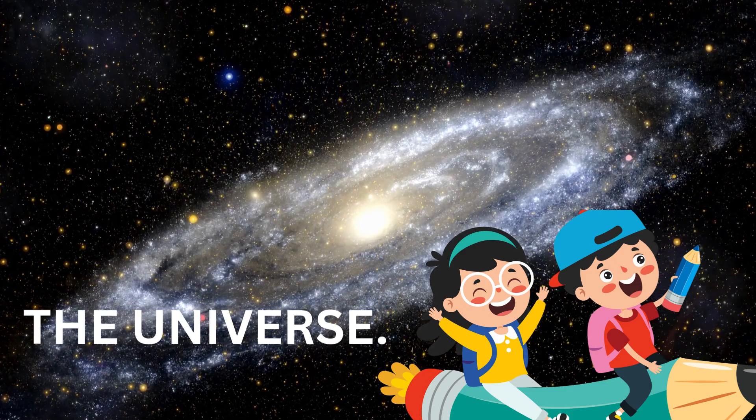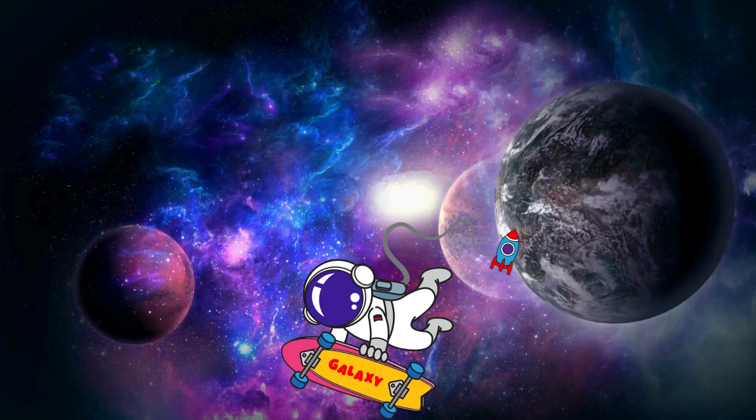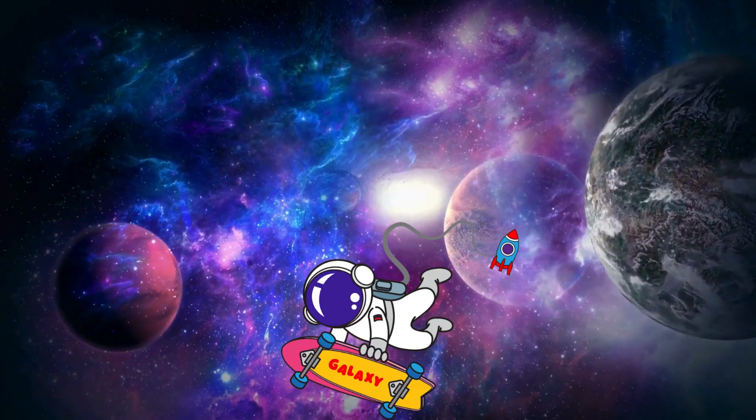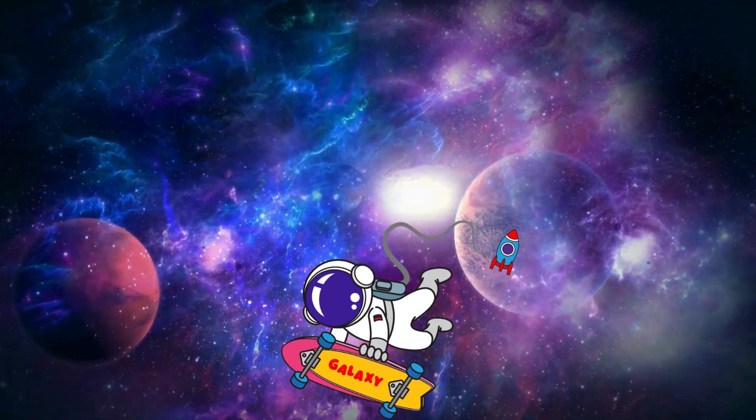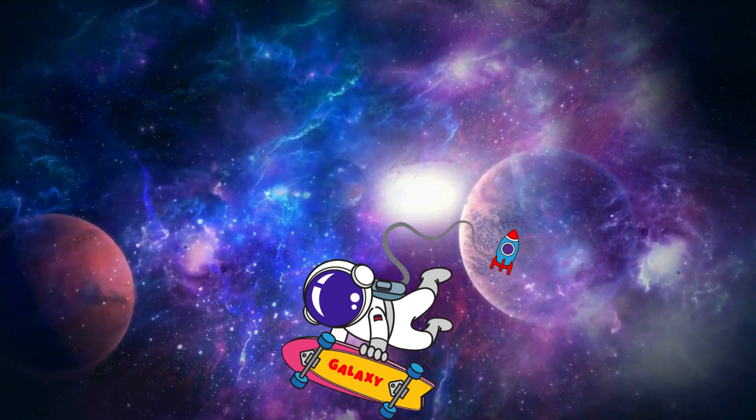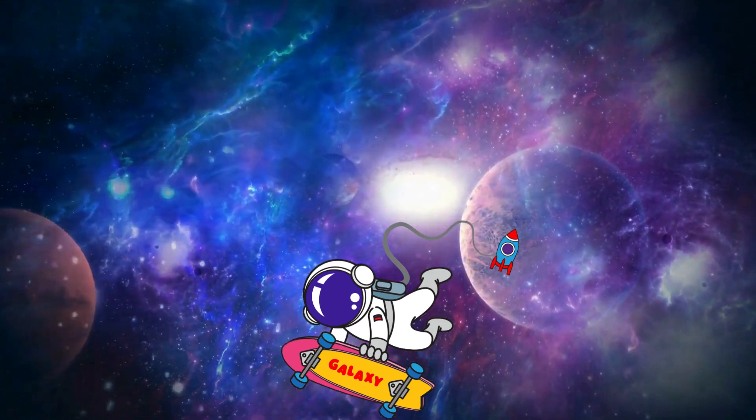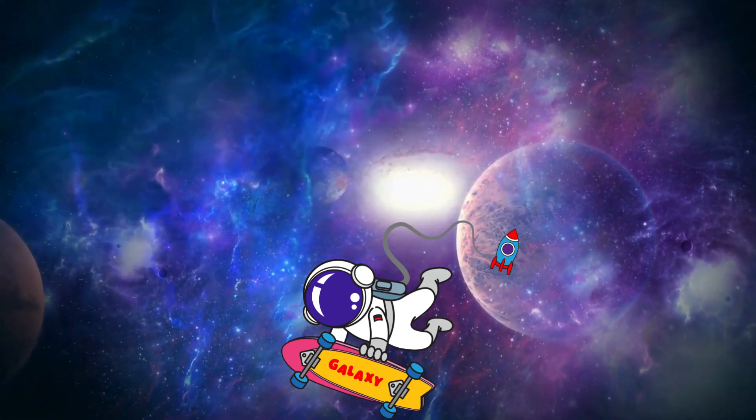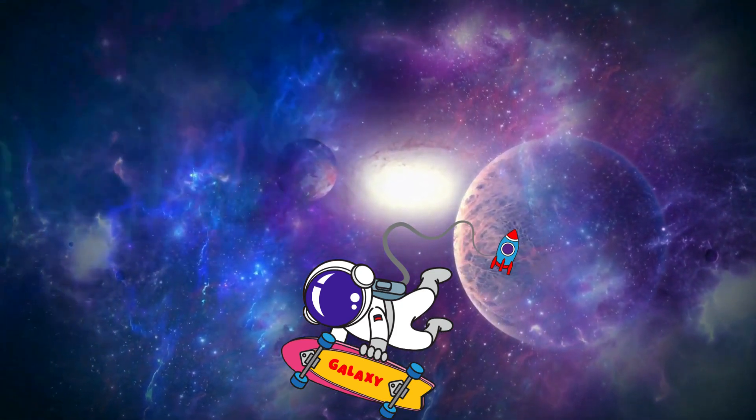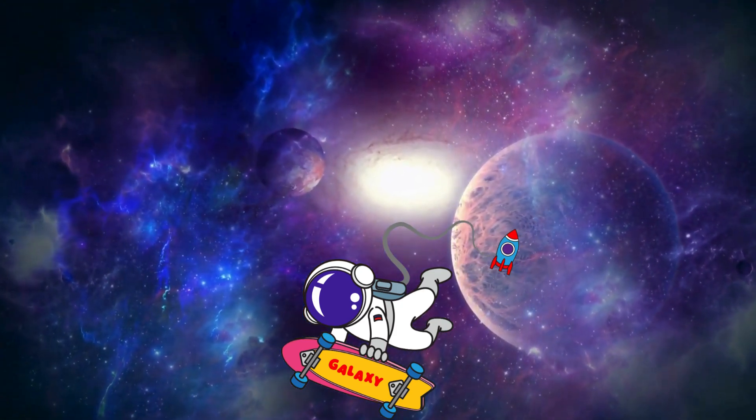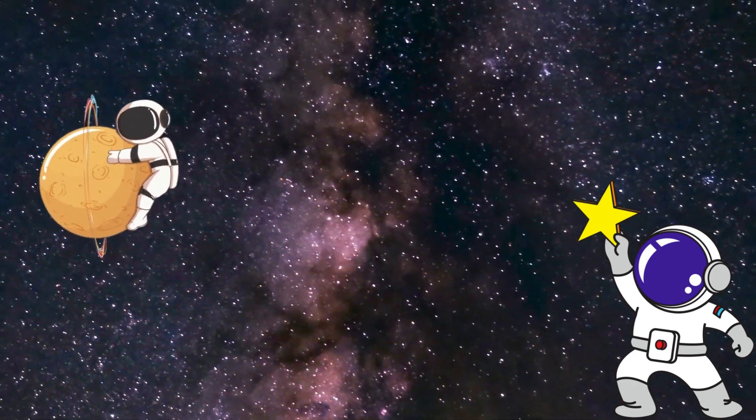Inside the universe are billions of galaxies. A galaxy is a huge group of stars, planets, and dust all held together by gravity. Our galaxy is called the Milky Way. The Milky Way is home to billions of stars, and around many of those stars are planets.